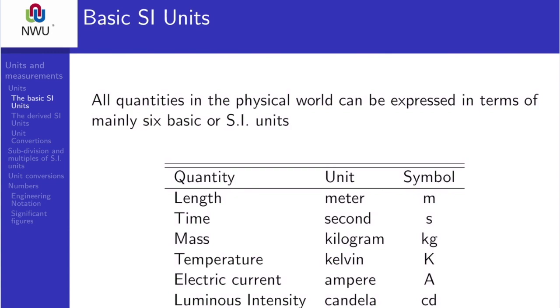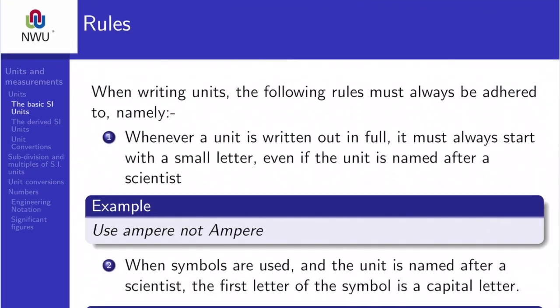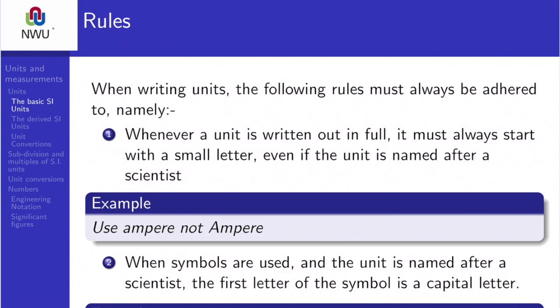Immediately you'll notice that there are several rules that you need to follow when you write units. For starters, when a unit is written in full it must always start with a small letter. Therefore you say ampere with a small letter, not a capital A, even though it is named after a person.